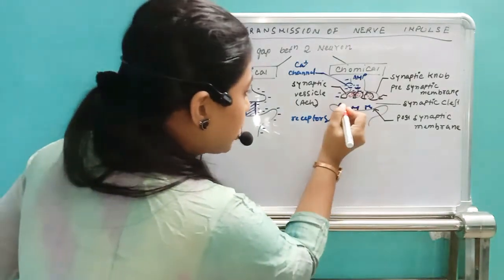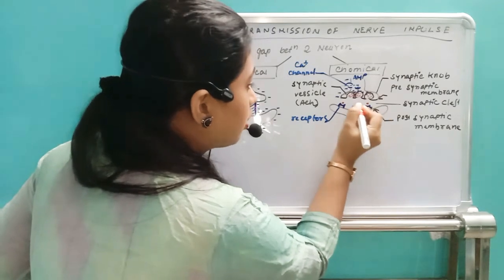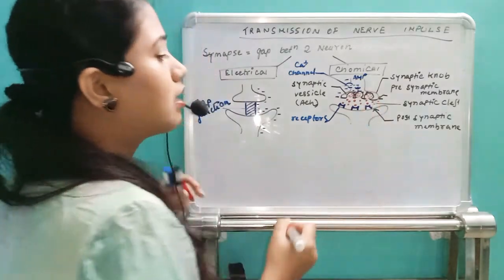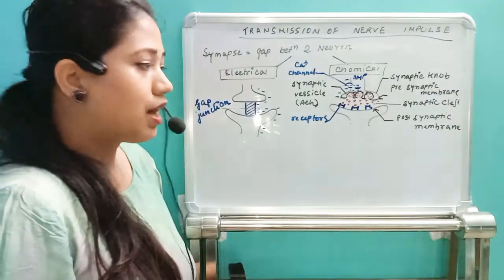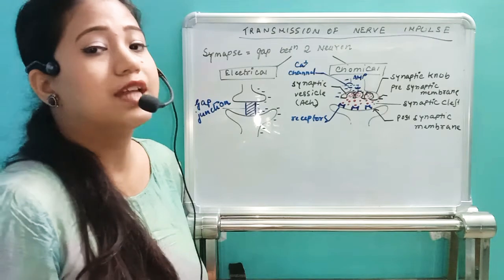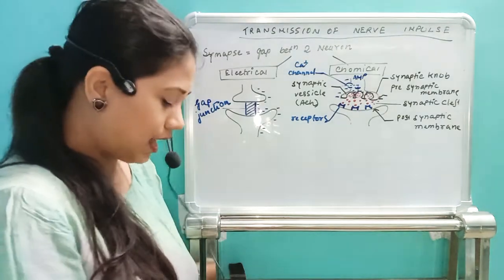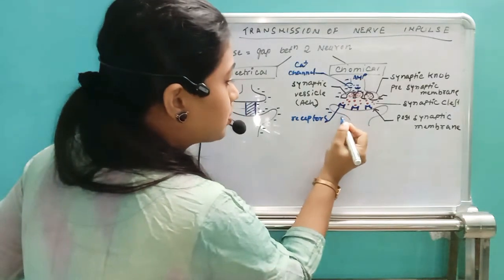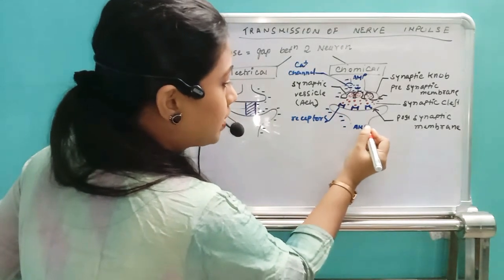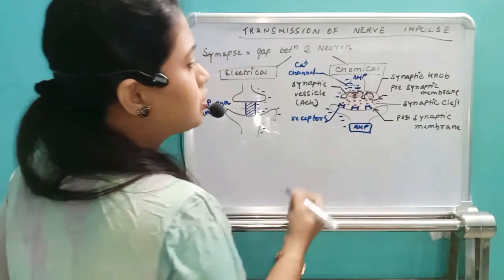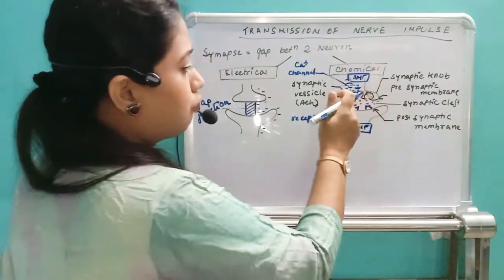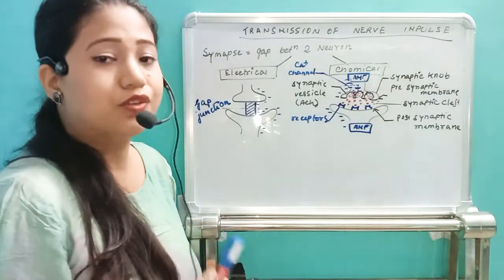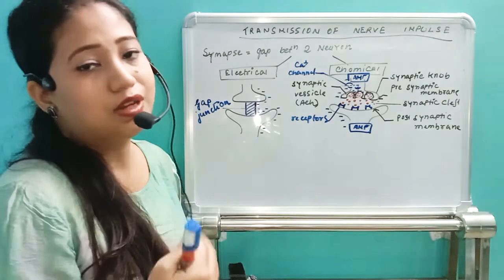The acetylcholine is released into the synaptic cleft region, and from there it moves and meets the receptors present on the post-synaptic membrane. The neurotransmitters get attached to the receptors — some of them also present in the synaptic cleft region. Then the post-synaptic neuron gets activated and action potential is generated in this post-synaptic neuron. So the action membrane potential is transmitted from one neuron to the next neuron — the nerve impulse is transmitted.